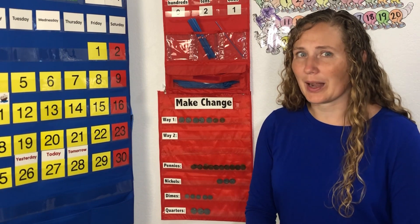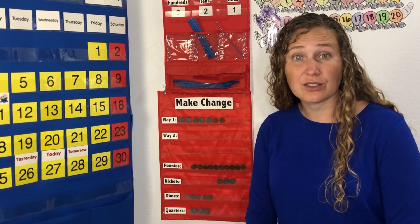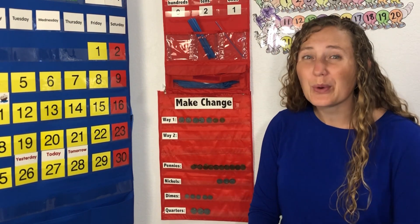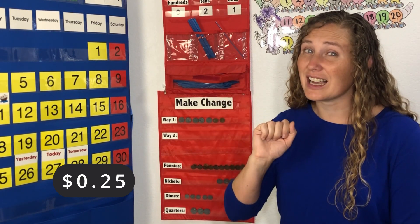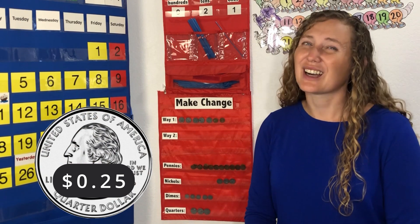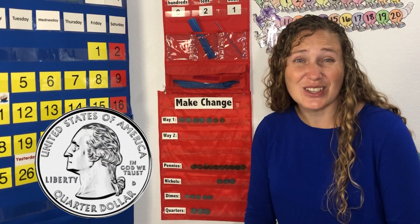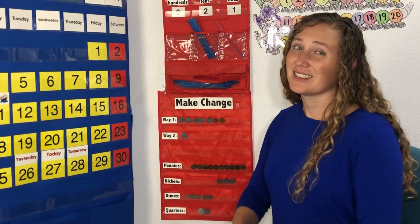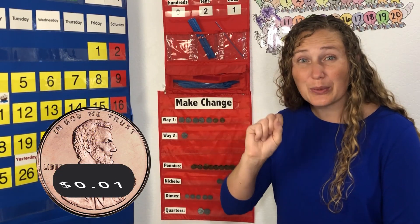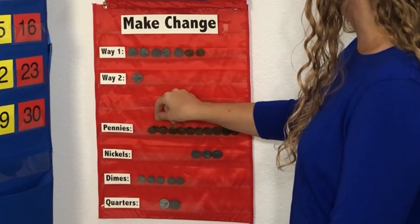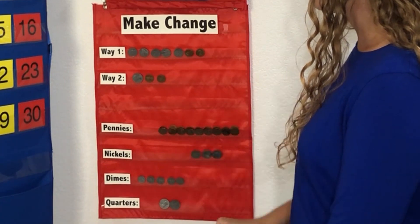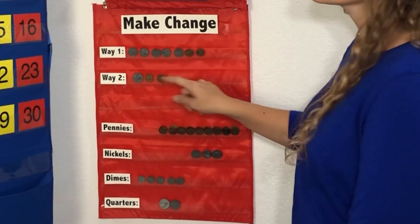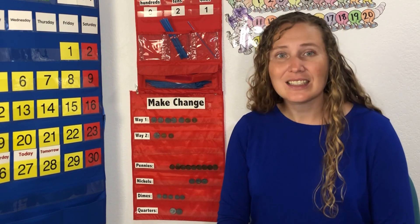What's another way that we could make 27 cents? Well, when we were counting our nickels, we had five nickels which equaled 25 cents. We have a coin worth 25, so we could trade those five nickels for a quarter. A quarter is worth 25 cents. Let's use a quarter: 25. Now we'll need to use pennies again, worth one cent each. 25, 26, 27. Two ways to make 27 cents!